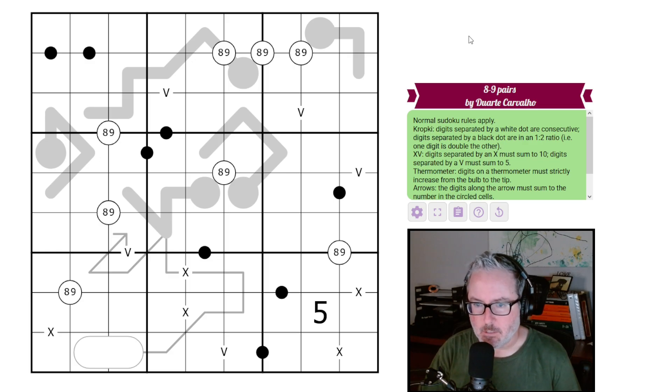We've got kropki. Digits by white dot - well, we don't have any white dots, so forget that. Black dots: digits by a black dot are in a one to two ratio. So we have these guys here. These will be in a one to two ratio or one will be double the other.